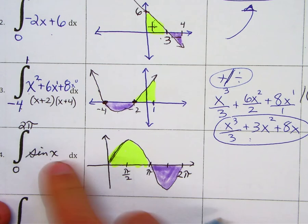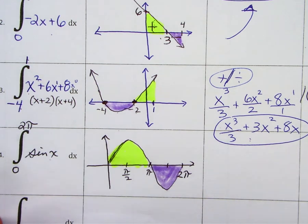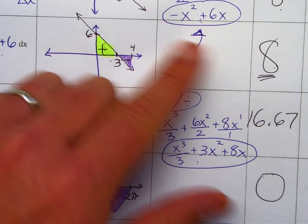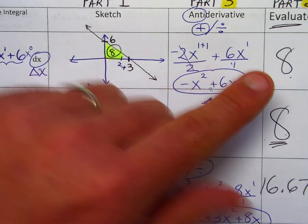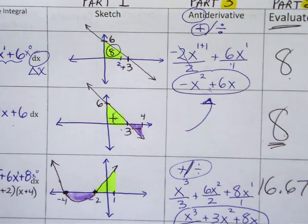Now I'm going to skip over the antiderivative of sine and cosine. That is a totally different lesson here. But let me show you how to find the evaluate answer by hand. So I'm going to show you how to get this 8 using the antiderivative.